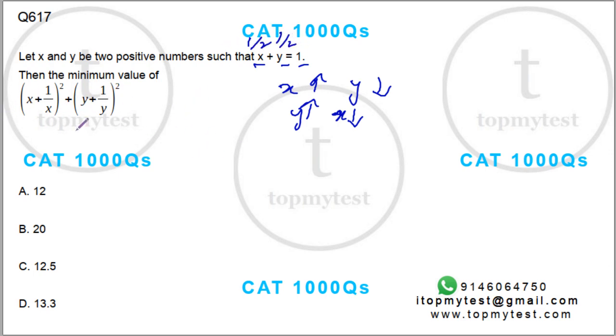If you put half and half, you will get 2 plus half square plus 2 plus half square. Right?